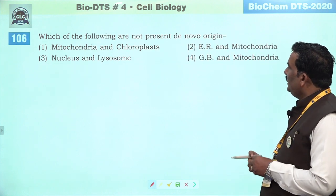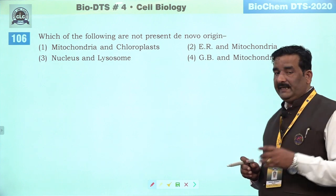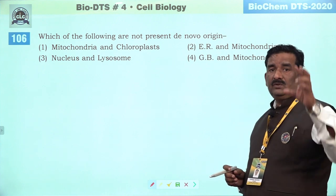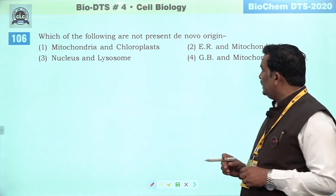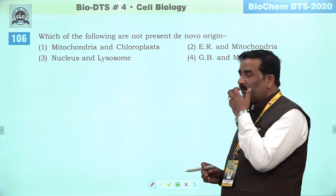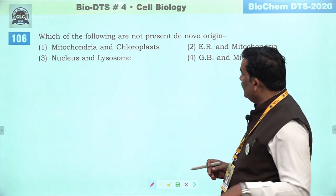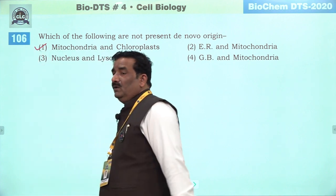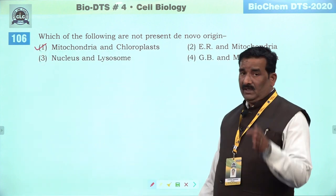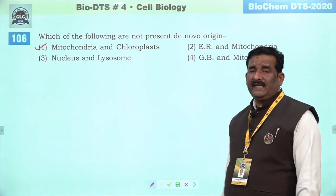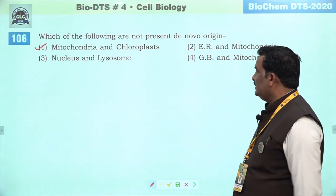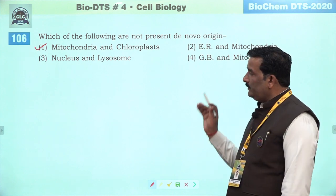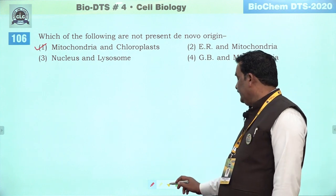Next question: which of the following are not represent de novo origin. NCRT ne shabd use kiya hai de novo. De novo ka matlab hai ki naye se kisi cheez ka formation. Not represent — chloroplast aur mitochondria kabhi bhi de novo origin show nahi karte — they always prepare from pre-existing mitochondria and pre-existing chloroplast. First is the right answer — baaki de novo show kar sakta hai.